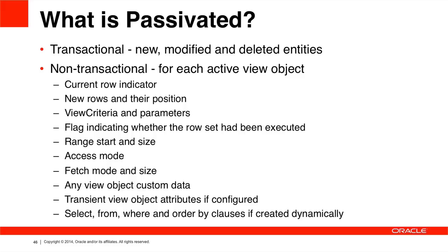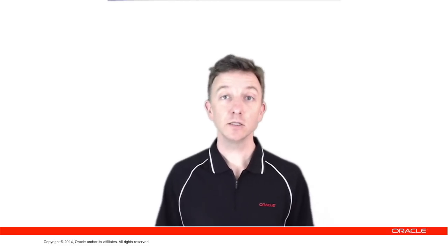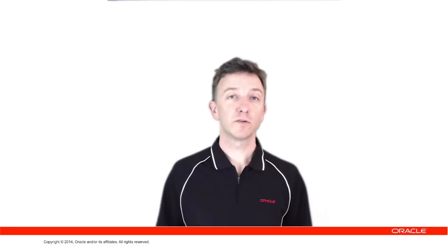Why is the view object current row indicator passivated? If it weren't passivated across requests for a user session, the user would see the current row in a table reset from what they had selected in the previous request back to the first row in the next request. Now, notice what ADF Business Components doesn't passivate: it doesn't passivate the actual queried rows themselves — they are only passivated if updated, deleted, or a new record is created. This is because passivating all queried rows could be a huge amount of data depending on how the application is built, making passivation and activation much slower and affecting user throughput.